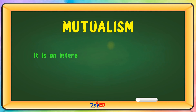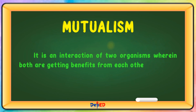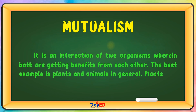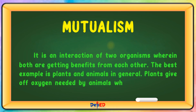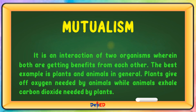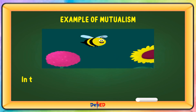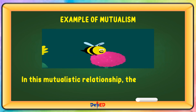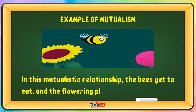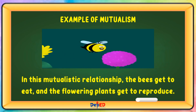Mutualism is an interaction of two organisms wherein both are getting benefits from each other. The best example is plants and animals in general — plants give off oxygen needed by animals, while animals exhale carbon dioxide needed by the plants. Another example of mutualism is a bee and a flower. In this mutualistic relationship, the bees get to eat and the flowering plants get to reproduce.